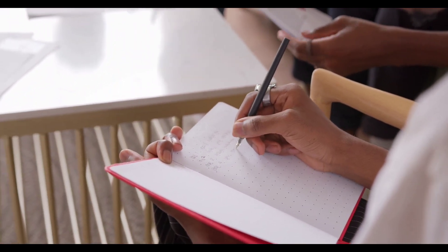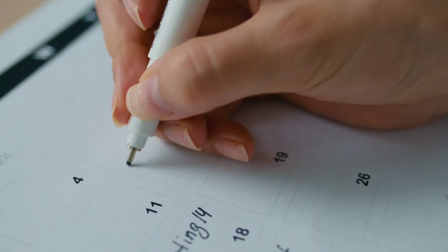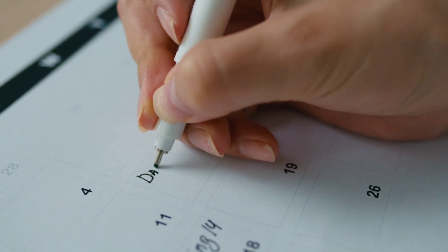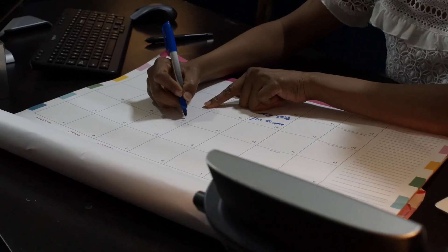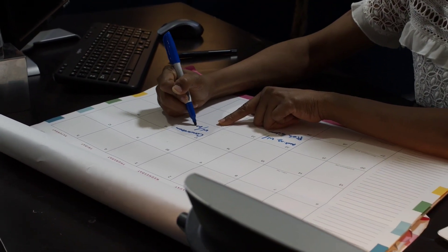3. Quill pens were the primary writing tool for many centuries and were made from goose, swan, or raven feathers. 4. Steel nib pens, a precursor to modern fountain pens, gained popularity in the 19th century.